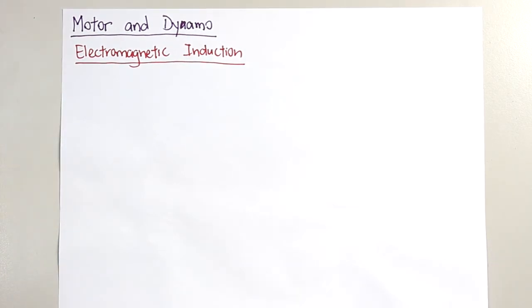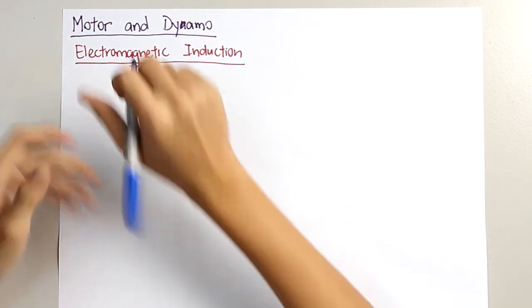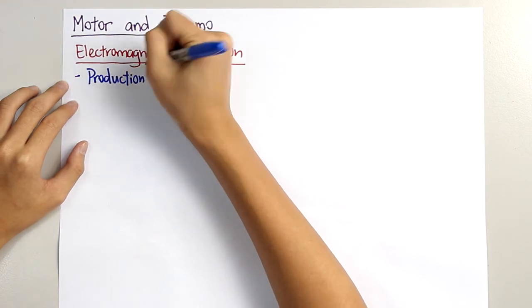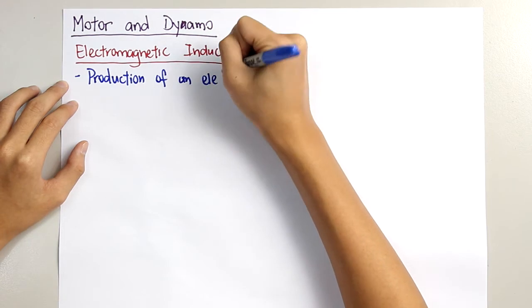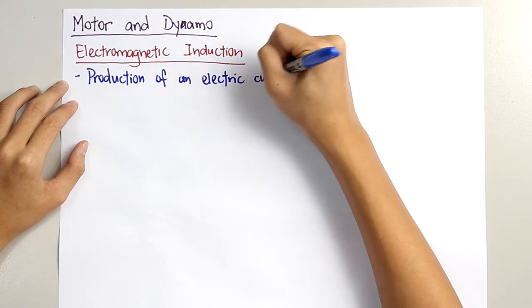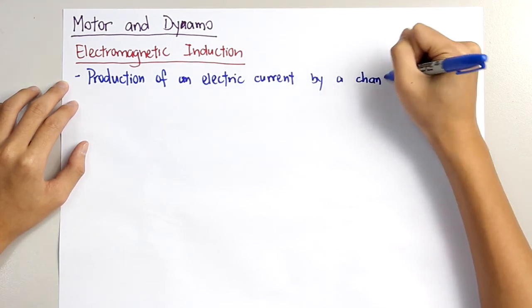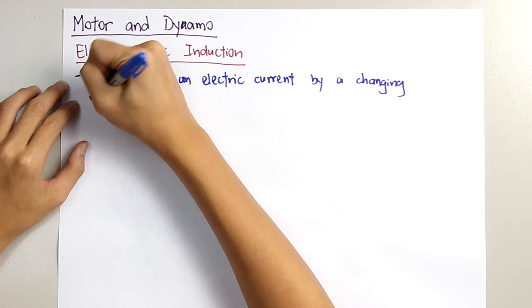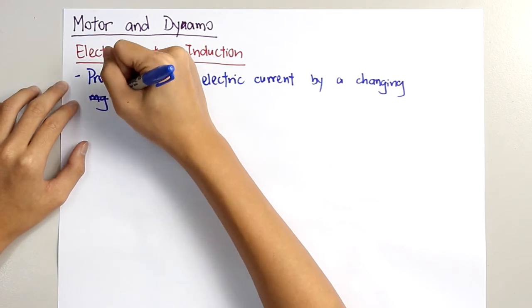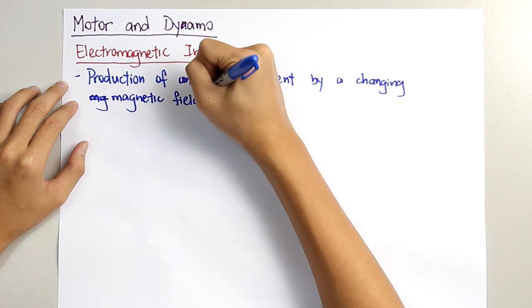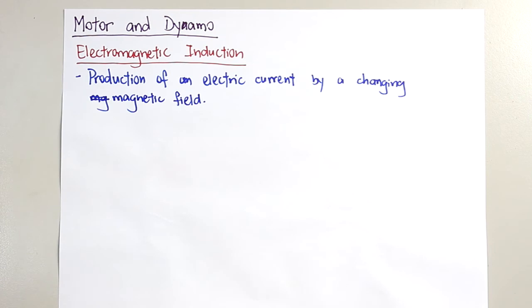So what is electromagnetic induction? The definition of electromagnetic induction is the production of an electric current by a changing magnetic field.